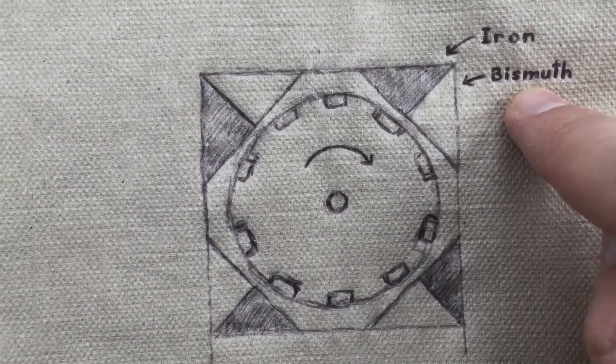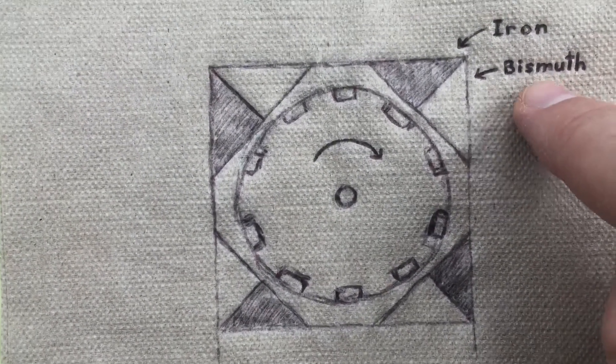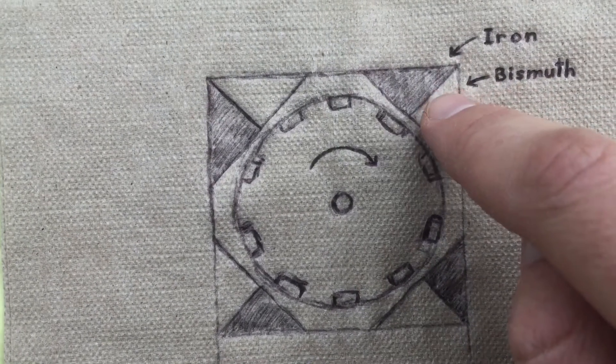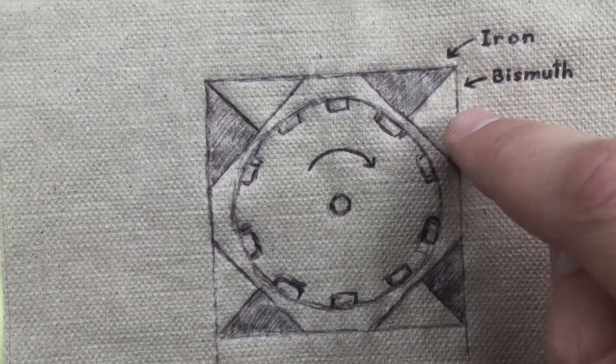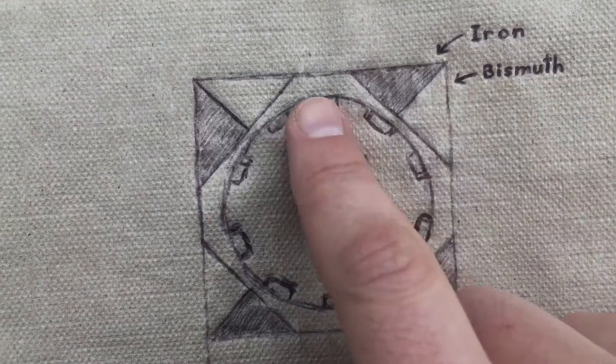But at any rate, the iron will in theory attract the magnets, and then bismuth, the magical metal that I found out repels magnets. There are actually quite a few metals that repel magnets, but bismuth has the strongest repulsion.